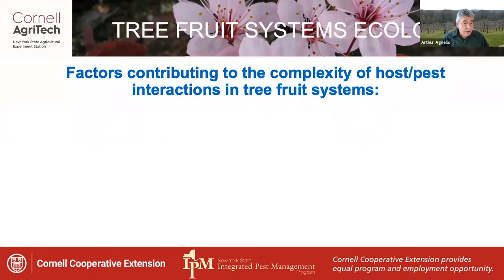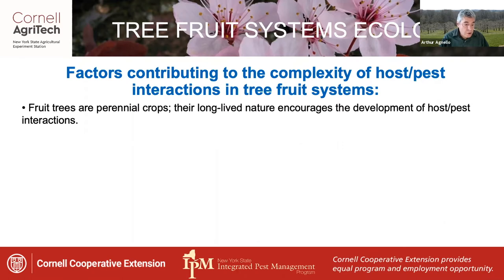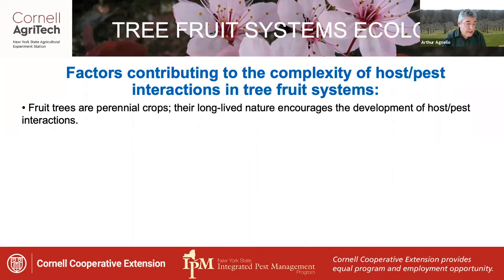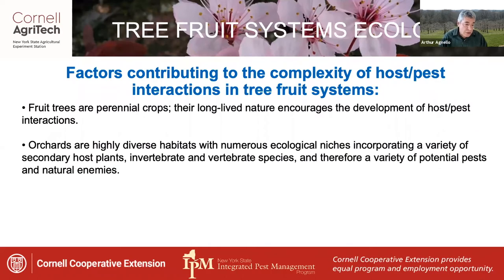Factors that contribute to this complexity of host-pest interactions in tree fruits include their perennial nature. A commercial orchard typically has a productive life of 20 to 25 years, and since there can't be any crop rotation during that time, insect populations can easily get established in and around the plantings. Also, orchards are highly diverse habitats with numerous ecological niches — true for all agronomic crops, but probably none as well developed as in an orchard.